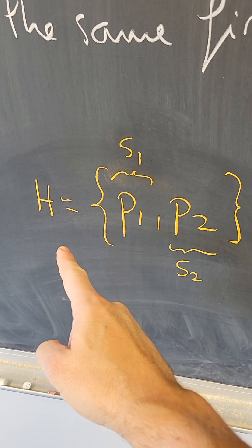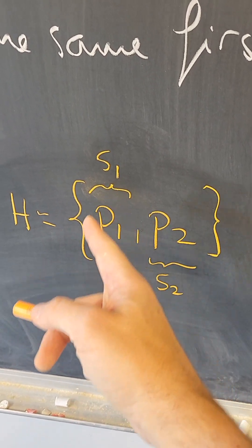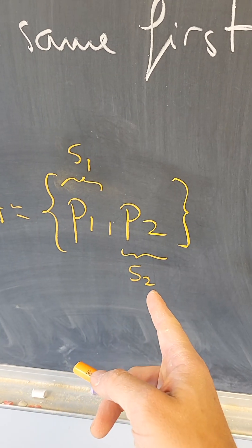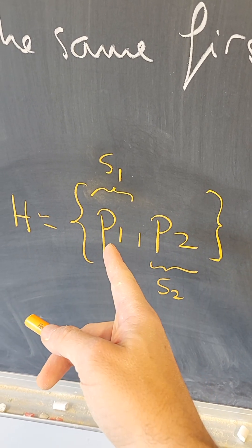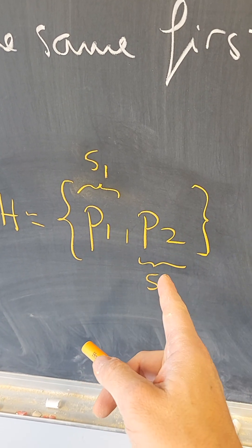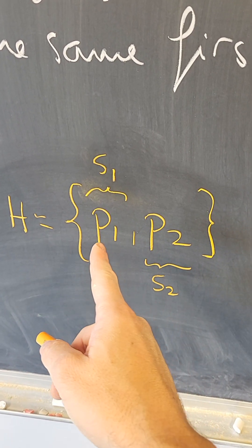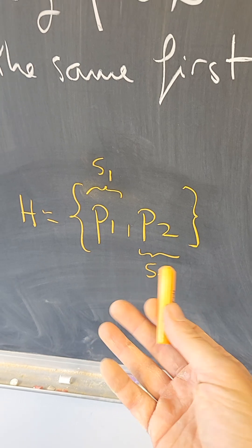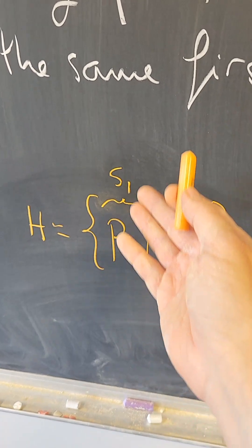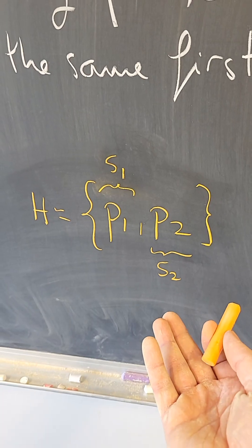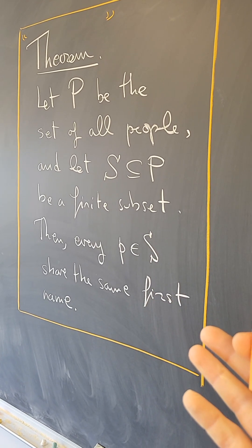In other words, if H has exactly two elements, then my set S1 would be this person. My set S2 would be that person. And just because this person has a name and this person has a name, I cannot compare the two people with a set of one element and prove that they have the same name. So the induction step doesn't work when you only know it for sets of one person. So no, this is not true. And we do have different names.